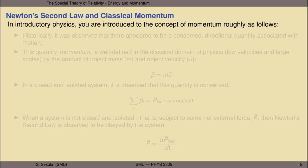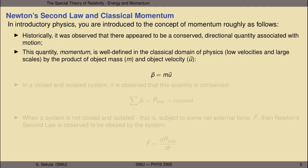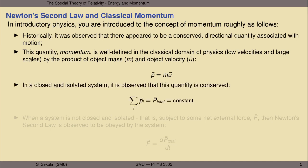Now let's take a look back at Newton's second law from the perspective of classical physics and in particular have a look at momentum, or classical momentum. In introductory physics you are introduced to the concept of momentum roughly as follows: historically it was observed that there appeared to be a conserved directional quantity associated with motion. This quantity, which we call momentum, is well defined in the classical domain of physics — that is, low velocities and large scales — by the product of the mass of an object m and the velocity of the object u. So we arrive at the classical definition of momentum: m times u gives us p, the linear momentum of that object.